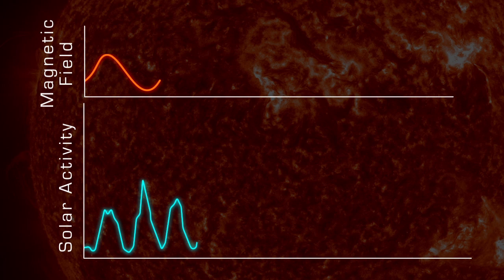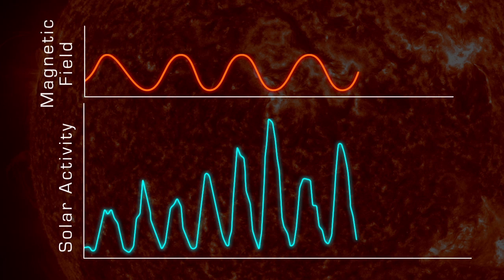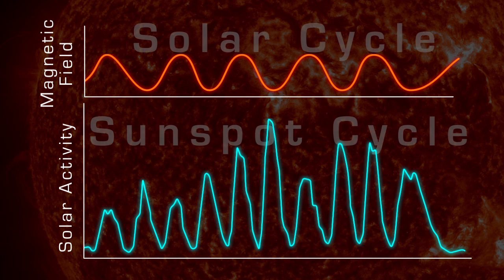The Sun's 11-year cycle is a symptom of a longer 22-year cycle called the solar cycle, or hail cycle, which affects the Sun's magnetic fields.